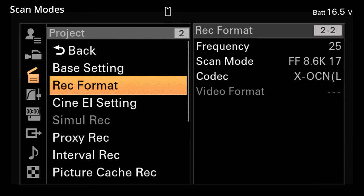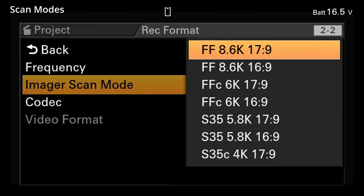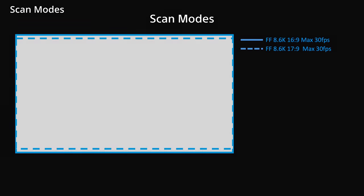In firmware version 1, the camera supports a variety of scan modes, starting with the largest scan, which is an 8.6K 16x9 scan of the full-frame sensor. Next, there's a slightly less tall 8.6K 17x9 scan of the full sensor. These scan modes are limited to a maximum of 30 frames per second.